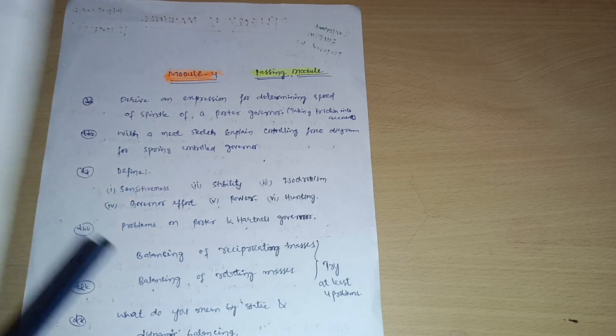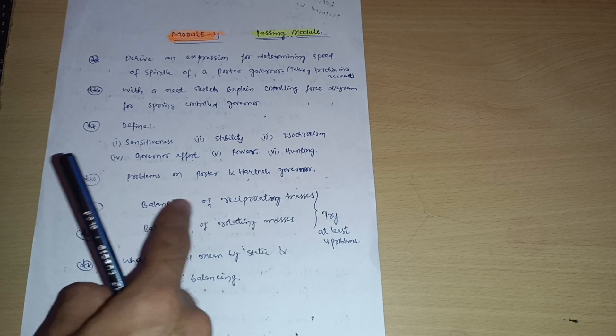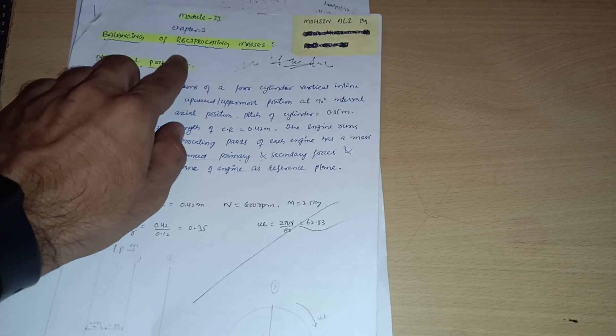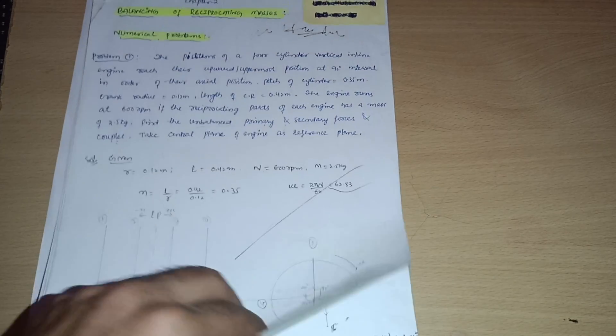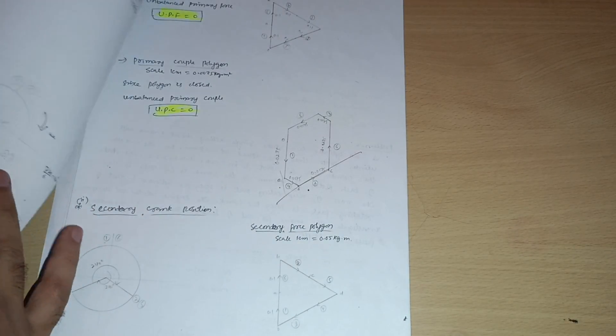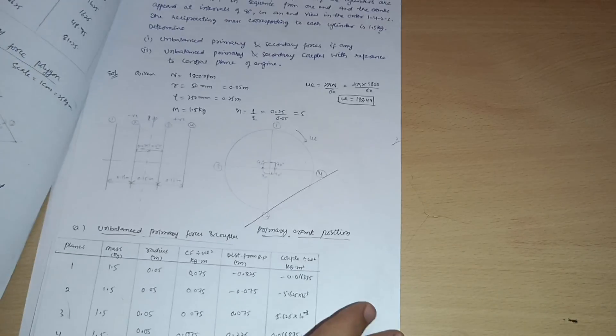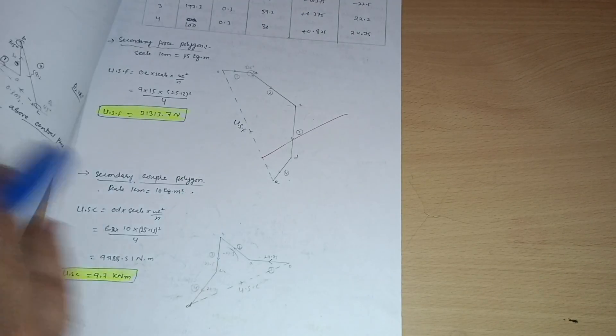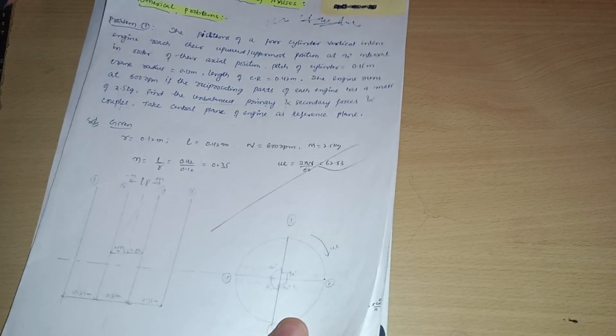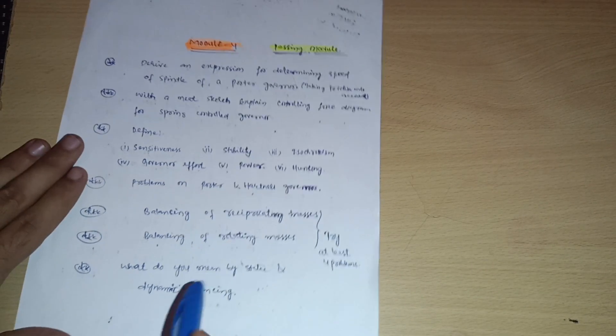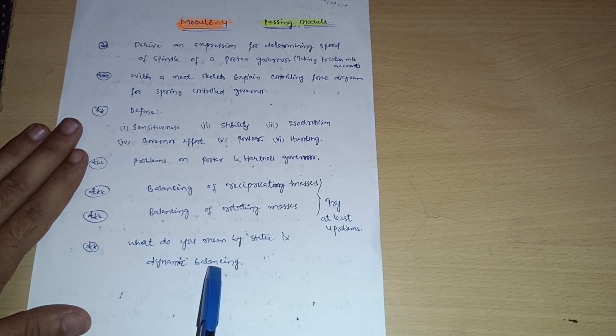I will show you the interface of the reciprocating masses section. You should go through reciprocating masses, which are easier compared to rotating masses. This is the balancing of reciprocating masses — numerical problems are here where you are supposed to draw the force polygons and couple polygons. Go through these varieties of questions in the handwritten notes; at least try four to five problems so that you can easily get 20 marks from this module. Also, what do you mean by static and dynamic balancing — this may be a 6-mark question from this module.